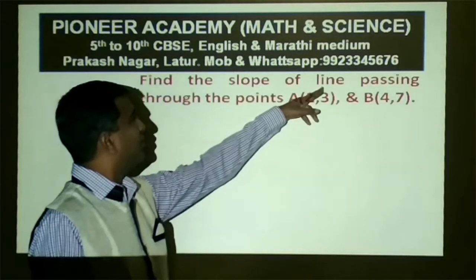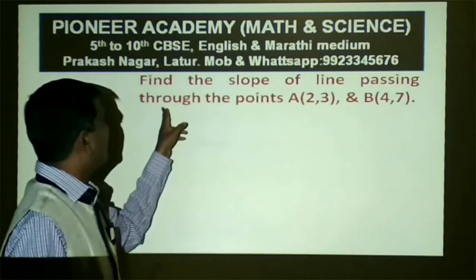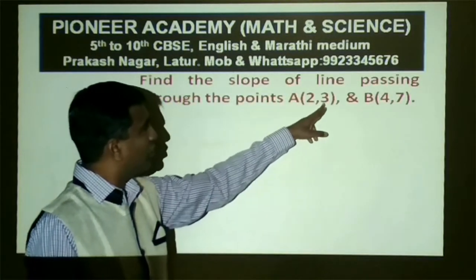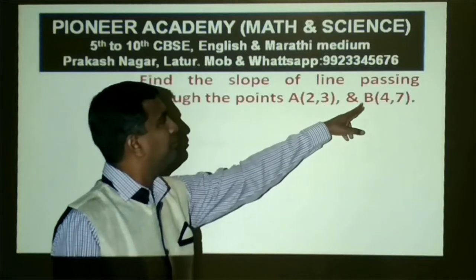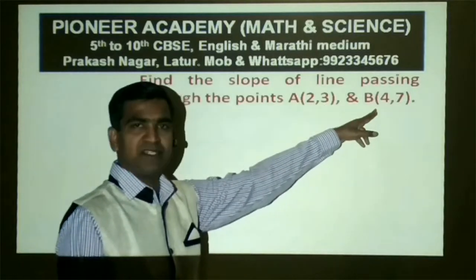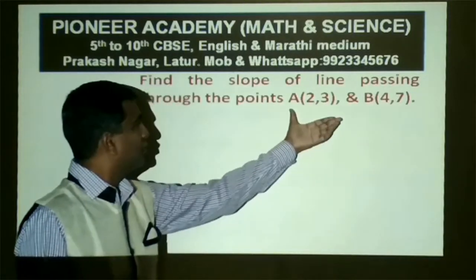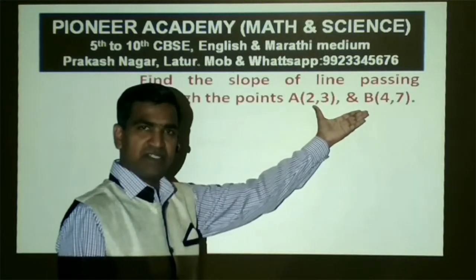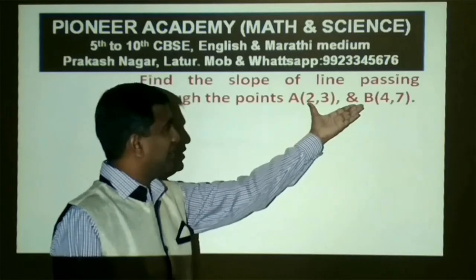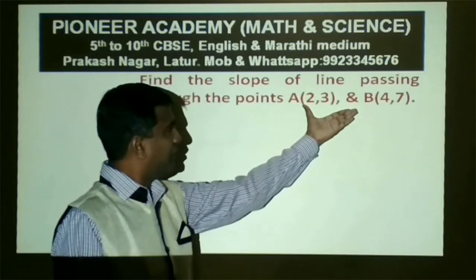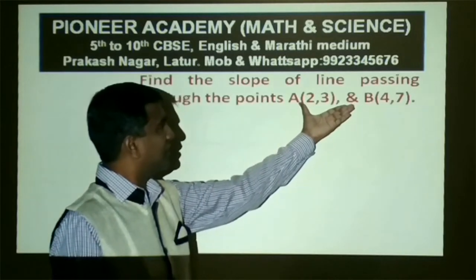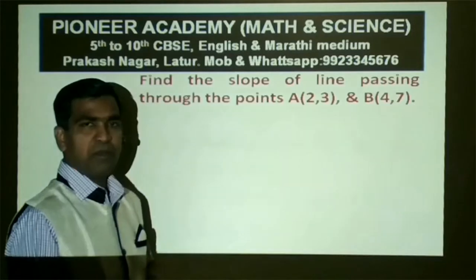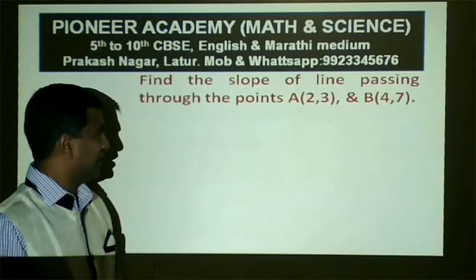Find the slope of line passing through the points A and B. There are 2 points on the line, and we need to calculate the slope.